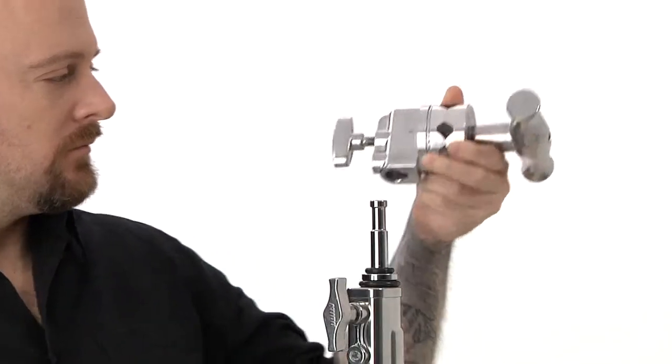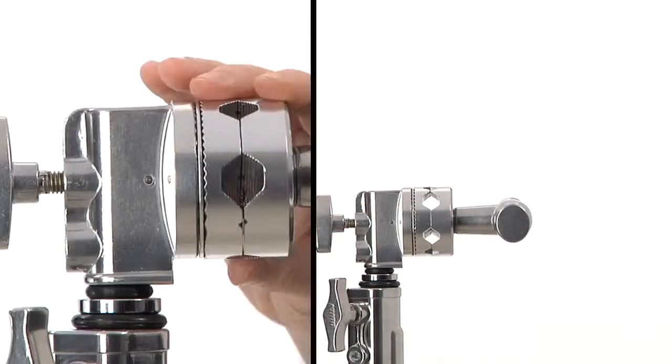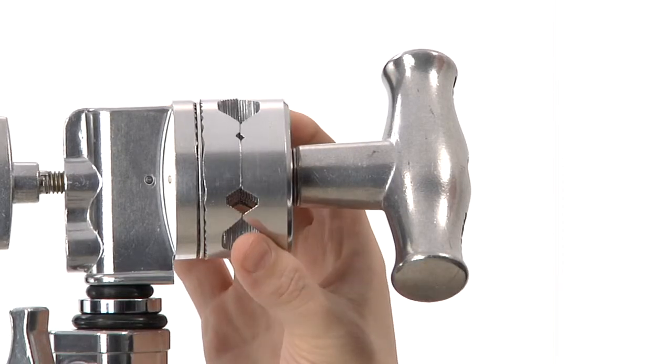The 2.5 inch grip head consists of a baby 5 eighth inch or 16 millimeter receiver attached to a pair of rotating aluminum discs.